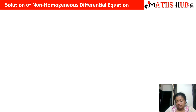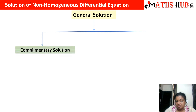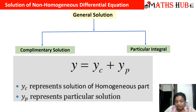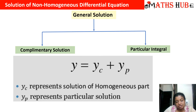Now let us understand how to calculate the solution. The general solution of a non-homogeneous second-order DE comprises two parts: the complementary solution and the particular integral. The complementary solution represents the solution of the homogeneous part, and the particular integral represents the solution of the non-homogeneous part. For a homogeneous DE the general solution contains only the complementary solution; for a non-homogeneous DE it contains both parts.